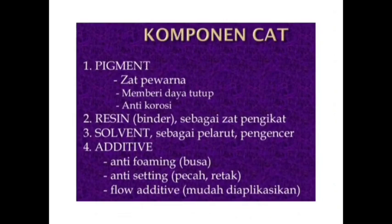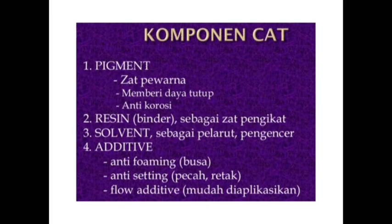Selanjutnya yaitu komponen cat. Komponen cat ada 4, yaitu: pertama, Pigment — yaitu zat pewarna atau memberi daya tutup dan anti korosi. Kedua, Resin — sebagai zat pengikat. Ketiga, Solven — sebagai pelarut atau pengencer. Keempat, Additive — anti foaming atau busa, anti setting, flow additive, mudah diaplikasikan.